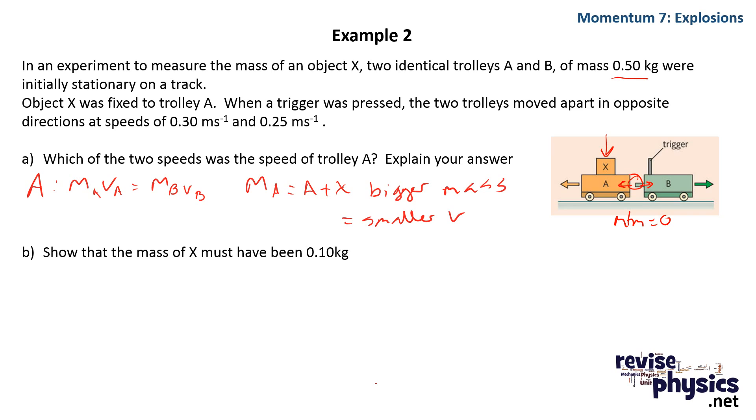We know that when the trigger was pressed, the trolleys moved apart in opposite directions, one with a speed of 0.3 and one with a speed of 0.25. Now the first question says, which of the two speeds was the speed of trolley A?